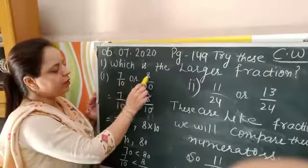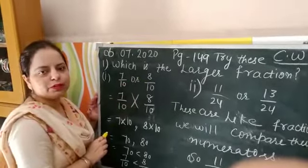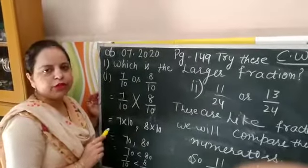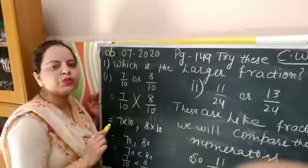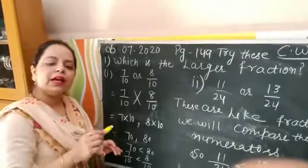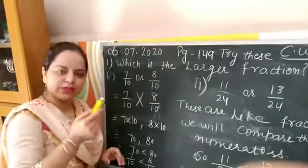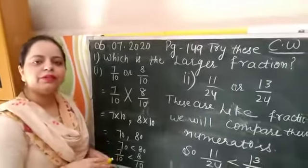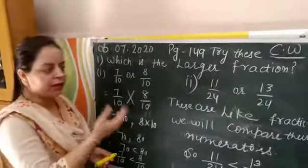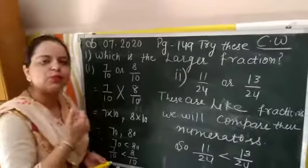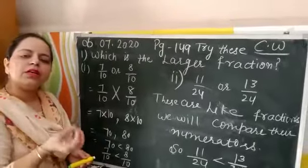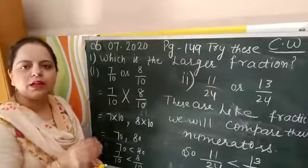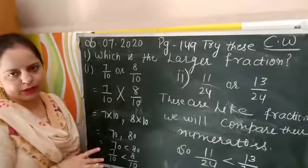The first part gives us 7 by 10 or 8 by 10. To compare any fraction, we apply our cross multiplication method. This method is used for checking equivalent fractions, larger fractions, and smaller fractions — whenever we have to compare fractions, we always apply cross multiplication.